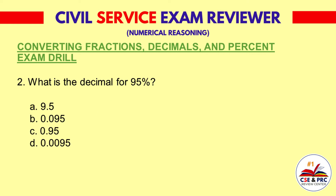Question 2: What is the decimal for 95%? A. 9.5. B. 0.095. C. 0.95. D. 0.0095. The answer is C — 0.95.